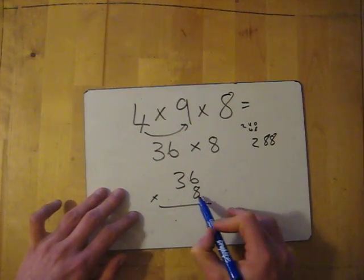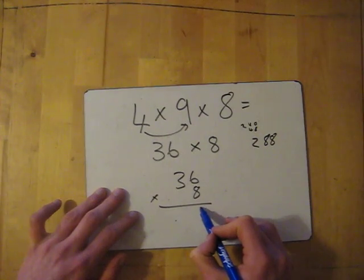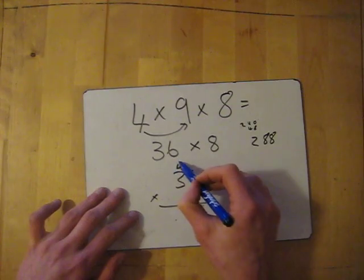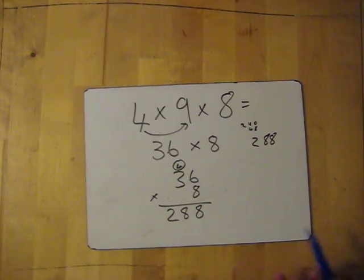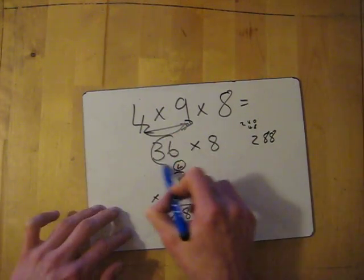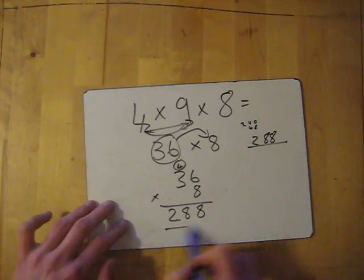Or you can just do your two by one long multiplication. So 8 times 6 is 48, write down the 8, carry the 4. 8 times 3 is 24, and then add that 4 is 28. So either way, that's the case: multiply the first two numbers and then use that answer to multiply with the last number. So this one is 288.